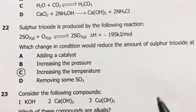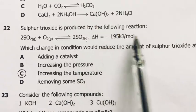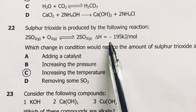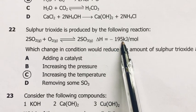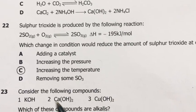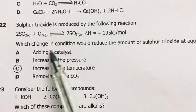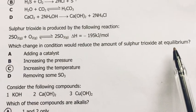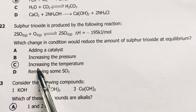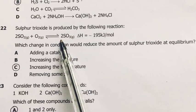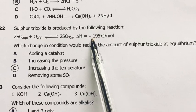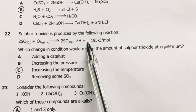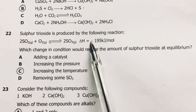Number 22, sulfur trioxide is produced by the following reaction. Sulfur dioxide plus oxygen giving us sulfur trioxide and energy of 195 kilojoules. Which change in condition would reduce the amount of sulfur trioxide at equilibrium? Increase in temperature. Look at this reaction, it is exothermic. This minus means it produces heat and this heat is projected out of the reaction system.